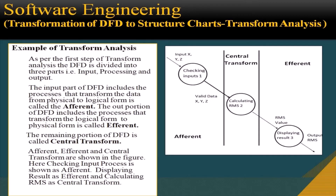As per step 1 of transform analysis, the DFD is divided into three parts: input, processing, and output. The input part of the DFD includes processes that transform data from physical to logical form and is called the afferent branch. The output portion includes processes that transform data from logical to physical form and is called the efferent branch. The remaining portion is called the central transform. In this example, checking input is the afferent branch, displaying result is the efferent branch, and calculating RMS is the central transform.